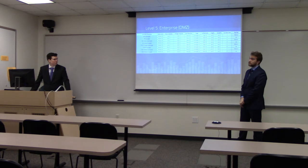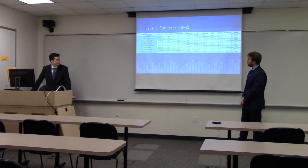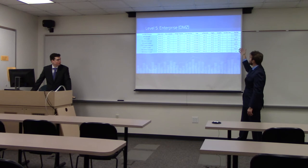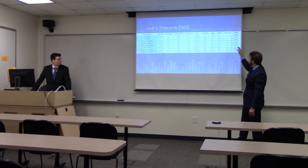This is the enterprise demilitarized zone — the highest level of the Purdue model. The final base scores for the unencrypted versions are all 6.0, resulting in a medium final risk. The encrypted versions score 3.3, which is considered low risk, again demonstrating the benefit of encryption at this level.